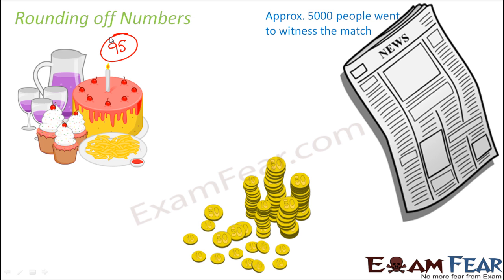Another scenario: your mother asks you to buy something from the grocery store that costs around rupees 47 or 60, but she gives you a hundred-rupee note in case you need a little more. We often encounter rounding in daily life — whenever we deal with large numbers, we round them to a nearby number that is easy to remember. Numbers like 100, 500, 5,000, or 50,000 — numbers with zeros — are easy to recall and help us make a fair estimate.